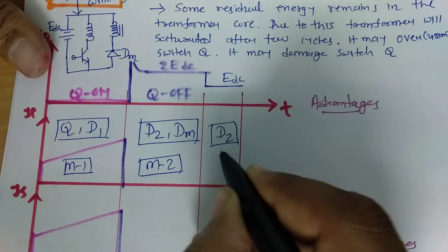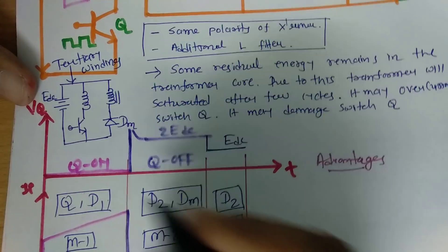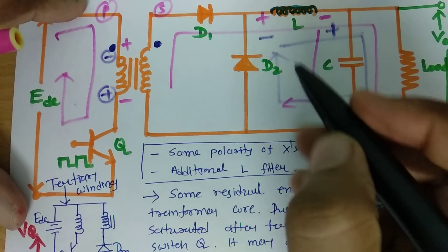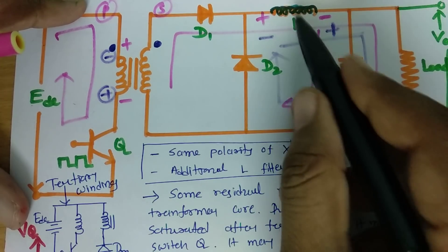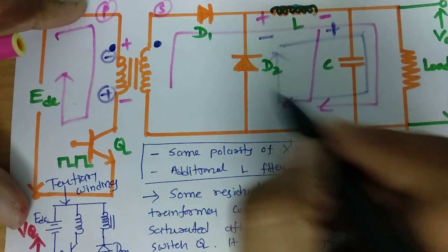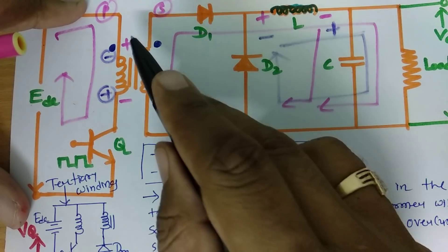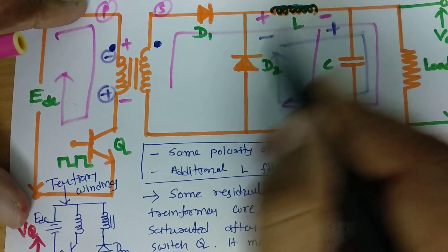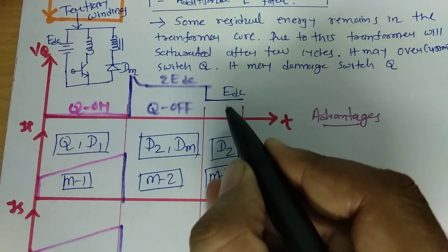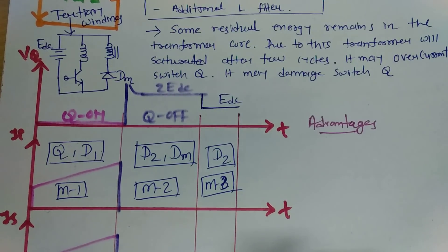There are three modes of operation. In mode 1 the switch is on and primary and secondary currents flow and increase gradually. In mode 2 the switch is off, demagnetization occurs, and inductor current flows in the freewheeling loop due to inductor polarity change. In mode 3 demagnetization of the core is zero, only the loop current flows via D2, and once demagnetization is complete, only EDC voltage appears across the switch. That is how this circuit functions and it keeps repeating.